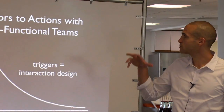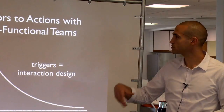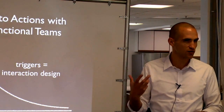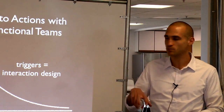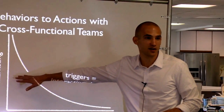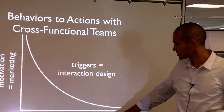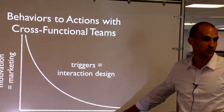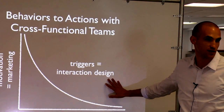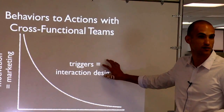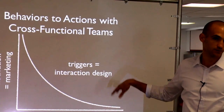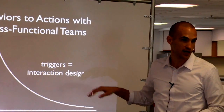Here's how behaviors map to cross-functional teams. When we get people who deal with motivation — the marketing people — to deal with ability by creating products that are easier to use, and interaction designers who can figure out how to place effective triggers, this is where we get magic. This is where behavior happens.